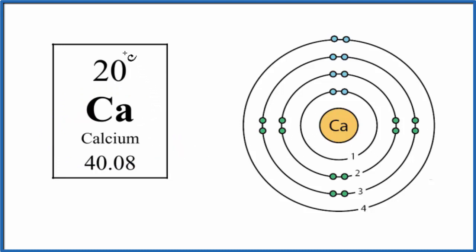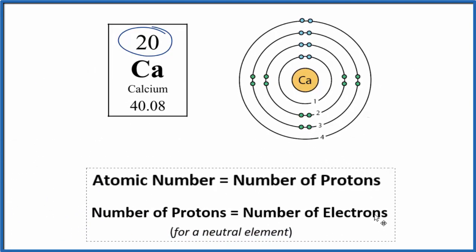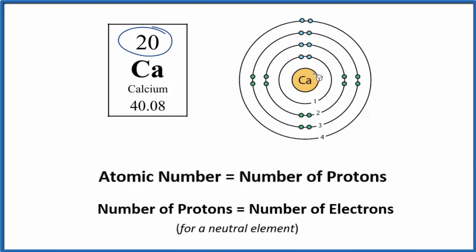So calcium has an atomic number of 20, and the atomic number, that's the number of protons in the nucleus here. So here's our nucleus for the calcium atom. We have 20 protons in the nucleus.